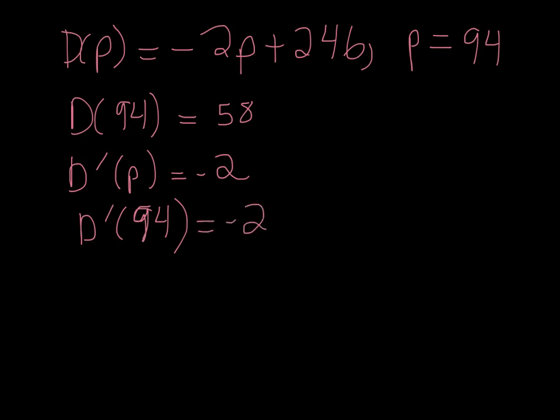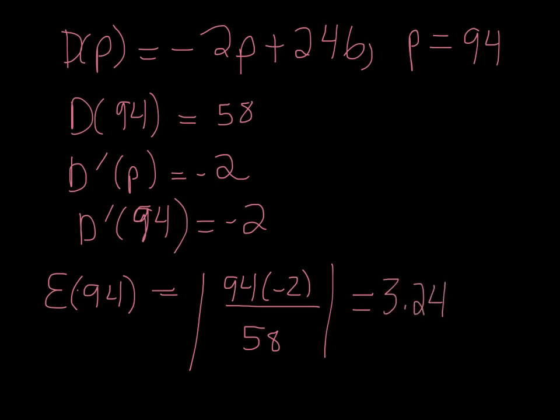So putting this all together, E(94) is going to be 94 times negative 2 all over 58. And what you get with that is 3.241, which is definitely larger than 1. So this one is elastic, and you don't want to raise prices.